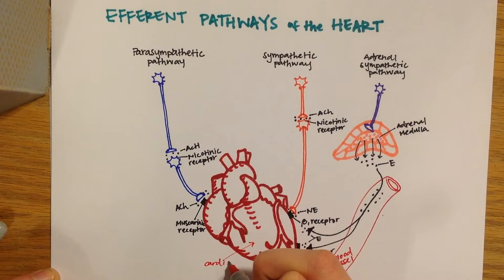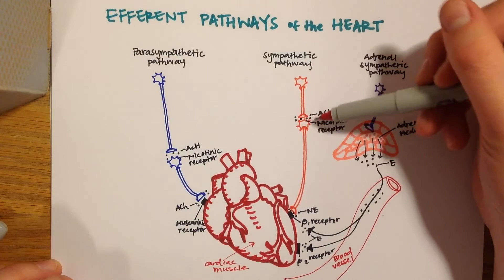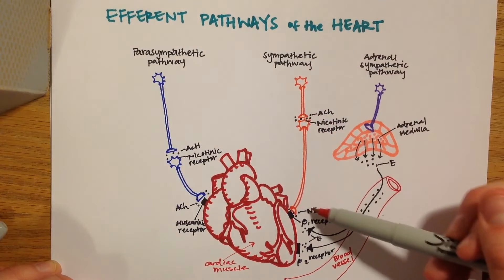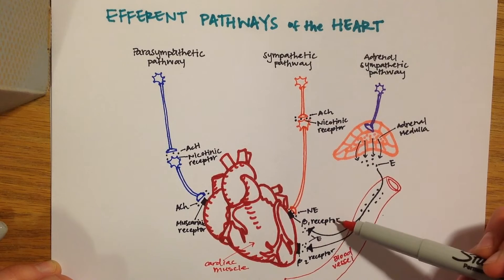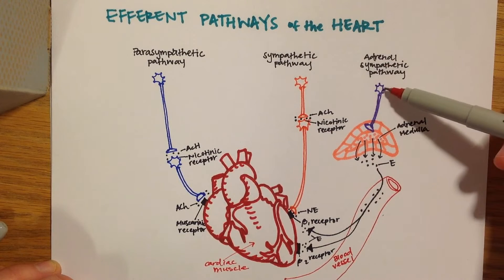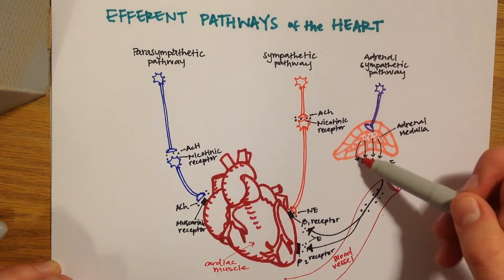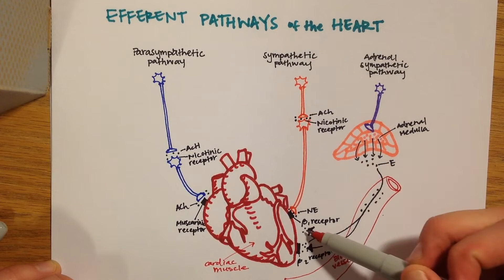Remember that acetylcholine is released to bind to the muscarinic receptors on the heart in the parasympathetic pathway. Norepinephrine is released from the sympathetic pathway to bind to the beta-1 adrenergic receptors. And epinephrine is released from the adrenal gland and travels through the bloodstream to bind to both beta-1 and beta-2 adrenergic receptors in another sympathetic pathway.